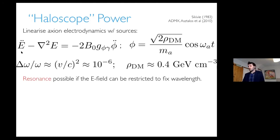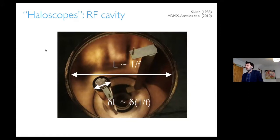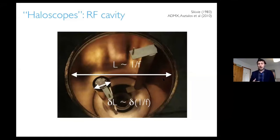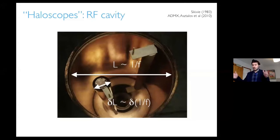We can have a resonance. For example, if we restrict the electric field to have fixed modes — that's the idea of the radio frequency cavity — and in the ADMX experiment, you restrict the electric field to have a given wavelength and make the natural frequency of your cavity resonant with the axion. This can be tuned, but not over a very wide range. We don't know the axion mass, so we have to try and scan the resonance.